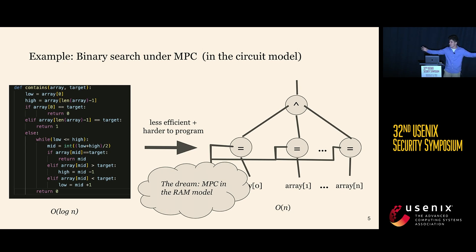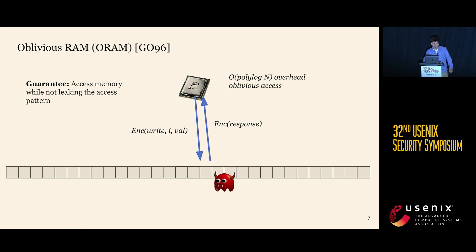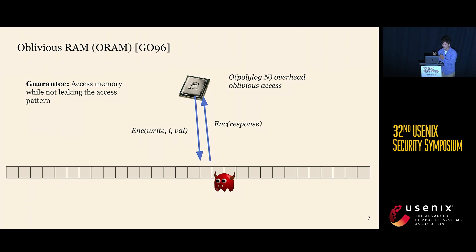Our joint dream is to do MPC in the RAM model. In the random access model, you have a small processor that operates on very few memory locations and can read and write into a much larger memory. A first-step breakthrough toward RAM MPC was Oblivious RAM by Goldreich and Ostrovsky — a protocol that allows a smaller processor to access a larger outsourced memory such that the memory inspector cannot determine which locations are read or written, essentially hiding the access pattern, where plain encryption would only hide memory contents.